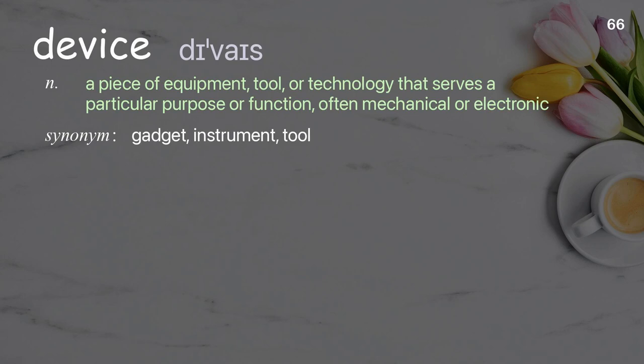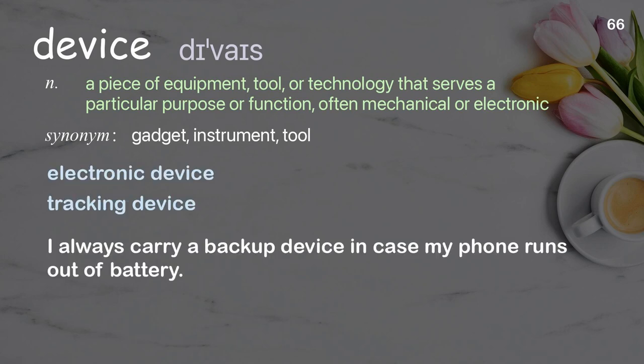Device: a piece of equipment, tool, or technology that serves a particular purpose or function, often mechanical or electronic. Examples: electronic device, tracking device. I always carry a backup device in case my phone runs out of battery.